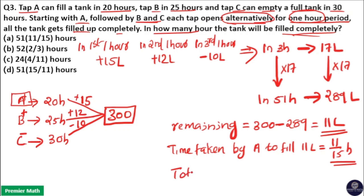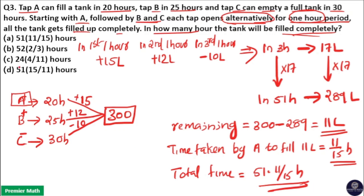So the total time is: in 51 hours, 289 liters are filled, and in 11/15 hours, 11 liters are filled. Therefore, the total time is 51 and 11/15 hours. So option A is your answer.